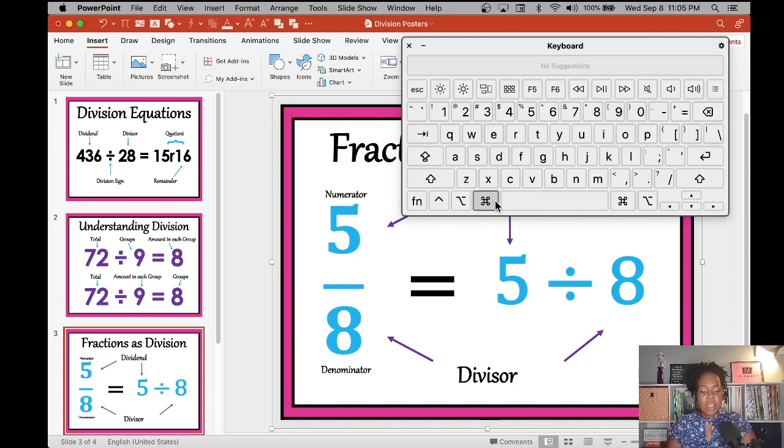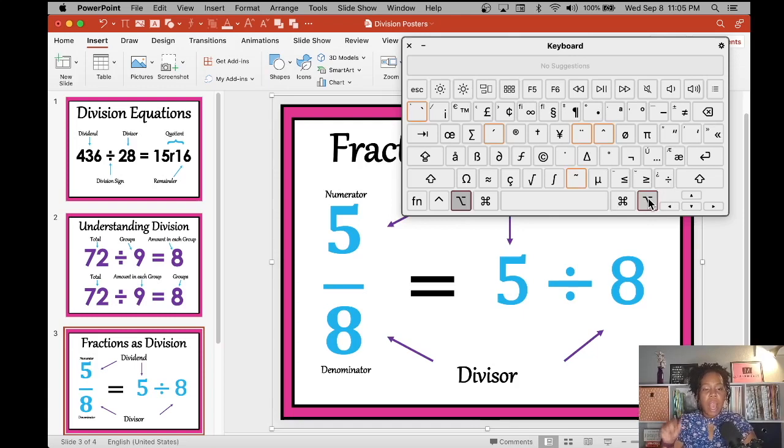So near the space bar, you have two keys on the left and right. Those are your command keys. And next to those are your option key or alt key. So what you want to do is hold down your option key and then click on the question mark and your division sign will be inserted.